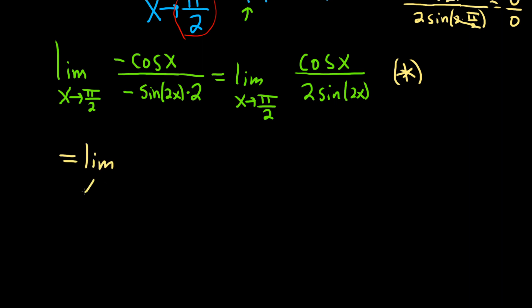So this is equal to x approaches pi over 2. Using L'Hopital's again, the derivative of cosine is simply negative sine. On the bottom we have 2 and then times the derivative of sine is cosine, so cosine 2x. And again, chain rule, so times the derivative of 2x, so 2. Now I believe we can plug in pi over 2 because there's not going to be an issue on the bottom.